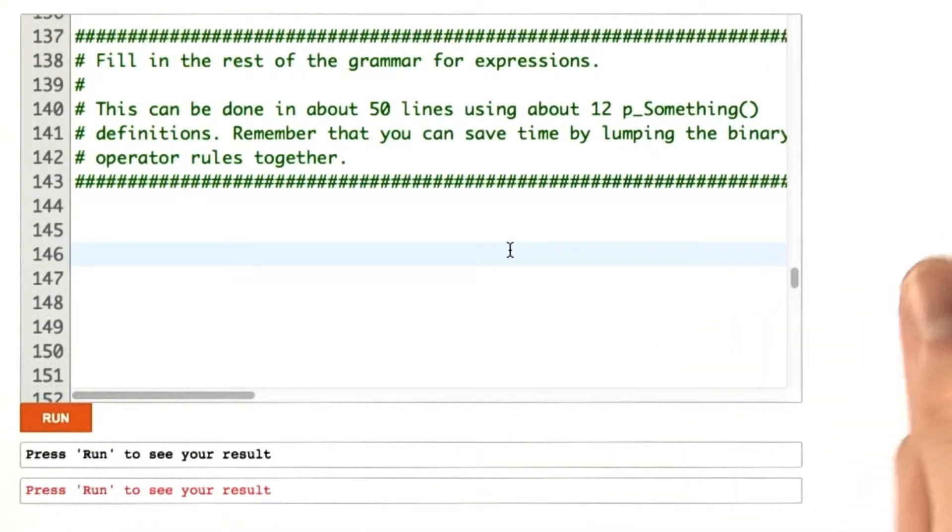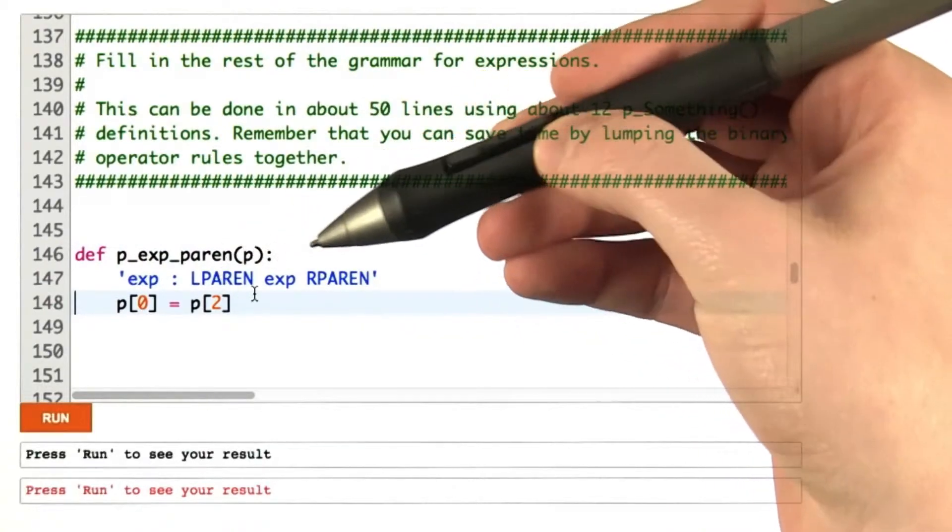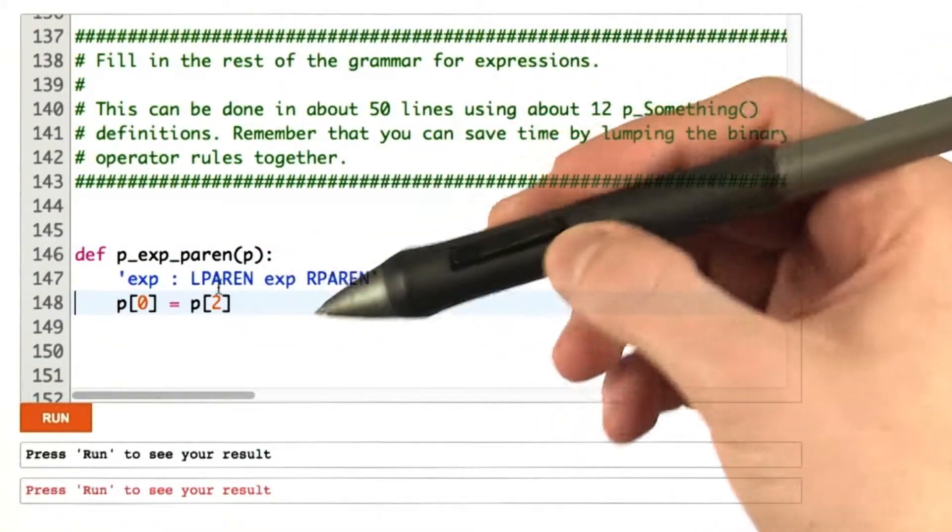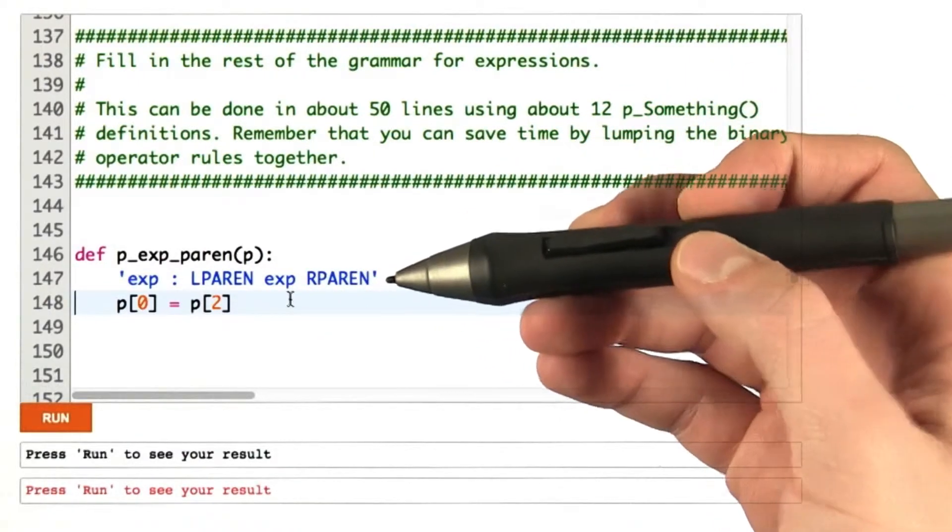So let's start filling in the rules. My first rule is going to handle parentheses. If we have a matching left and right parentheses, the expression that that is equal to is simply the contents of the parentheses. Pretty straightforward.